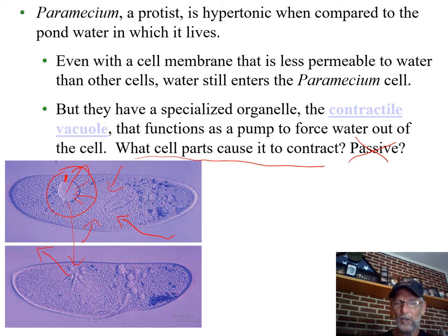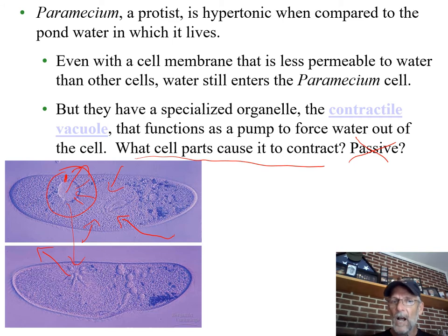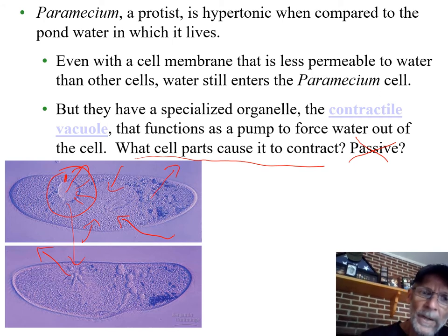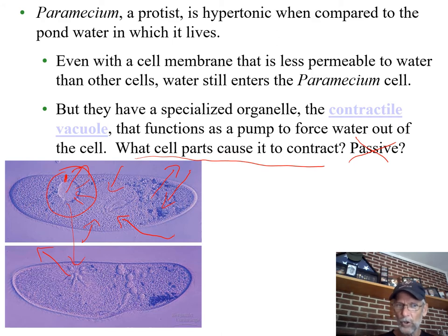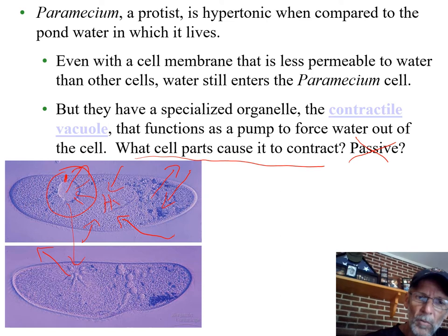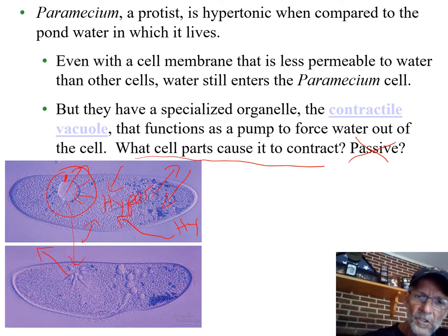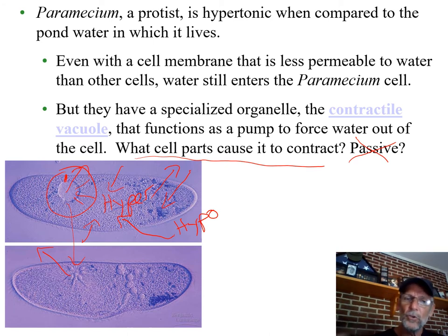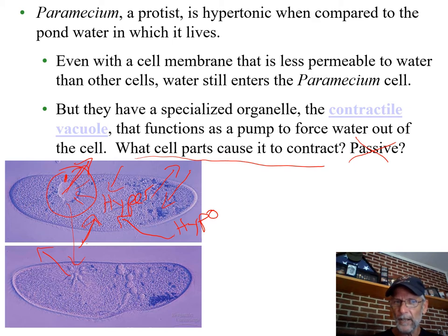Equilibrium doesn't necessarily mean things are equal overall — like just as much of this inside as outside. Isotonic and equilibrium are not the same thing. What is equal about equilibrium is how much stuff is going out compared to going in. So this organism maintains equilibrium even though its cytoplasm is still more concentrated — hypertonic — than the water outside, which is hypotonic. The system is not isotonic, but it is at equilibrium due to active transport counteracting the passive transport of osmosis.